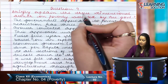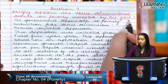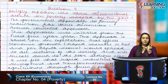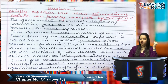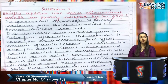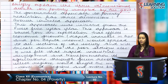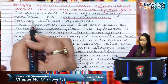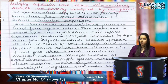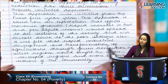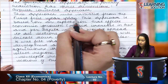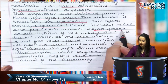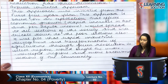Next question: briefly explain the three-dimensional attack on poverty adopted by the government. The government approach to poverty reduction has three dimensions. The first is the growth-oriented approach, initiated from the first five-year plan. This approach was based on the expectation that economic growth would spread to all sections of society and would trickle down to the poor sections also.